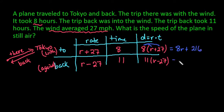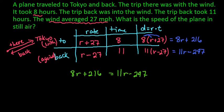And we would have 11r minus 297. So what we would do now is we know that the distance there and the distance back are going to be equal to each other, so we would just set up the equation 8r plus 216 is equal to 11r minus 297, and then we would just solve this problem.